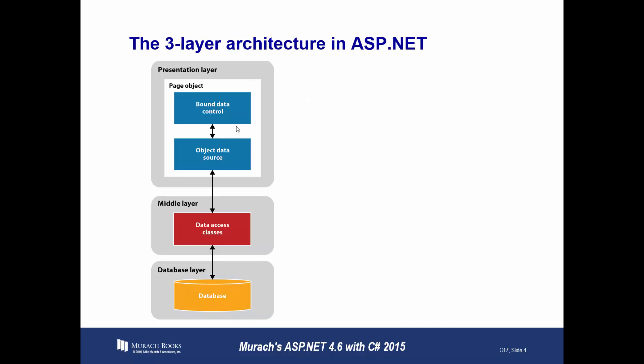This is how the book describes this three-layer architecture. The presentation layer on top contains the ASP pages that manage the appearance of the application. They can include bound data controls and object data controls that bind the data controls to the data. The middle tier contains the data access classes that manage data access for the application. They can also contain business objects that represent business entities such as customers, products, or employees that implement the business rules.